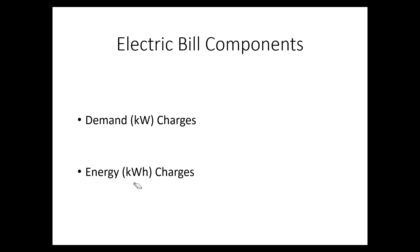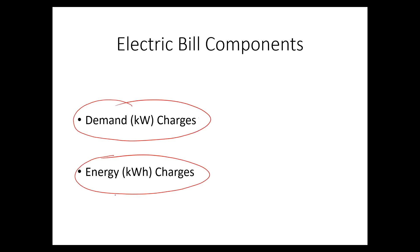The next two items you'll find on most electric bills are demand charges and energy charges. Energy is pretty obvious — it is the total number of kilowatt-hours you use over a month's period of time. Demand is more like a flow rate — how much energy you're using per second. They measure this every second and average it over 15 minutes. Whatever your maximum average flow rate during a 15-minute period, the utility remembers that.